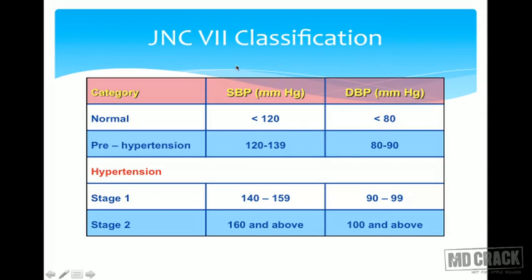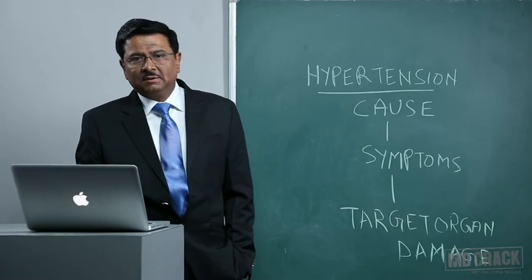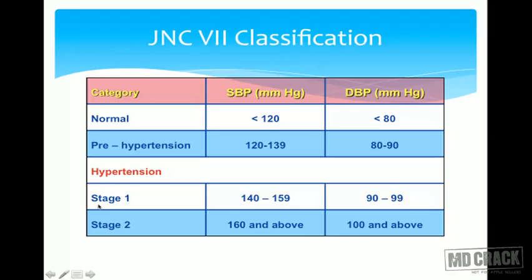This is the JNC 7th committee classification. If systolic BP is less than 120 and diastolic is less than 80, we call it normotensive. Prehypertension is when systolic lies between 120–139 and diastolic between 80–90. Stage 1 hypertension: systolic 140–159 mmHg and diastolic 90–99 mmHg. Stage 2 hypertension: systolic 160 or above and diastolic above 100 mmHg.